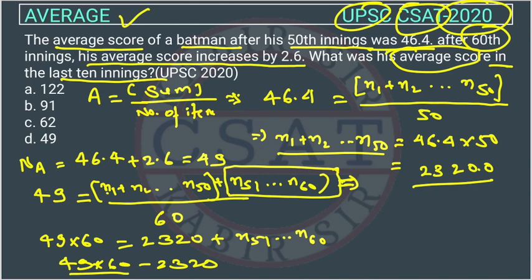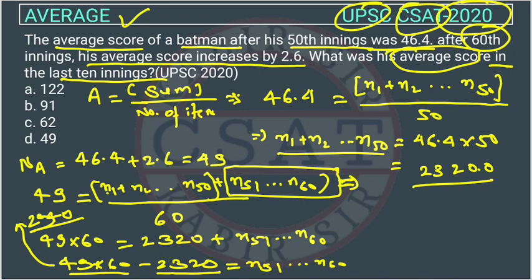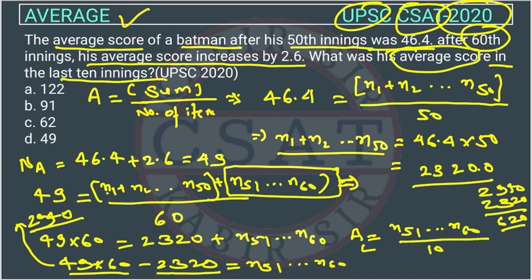Multiplying: 49 × 60 = 2940. So N51 + ... + N60 = 2940 − 2320 = 620. The average of the last 10 innings is 620 divided by 10, because there are 10 items from inning 51 to 60. So the average is 62. This is our answer — option C.